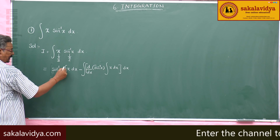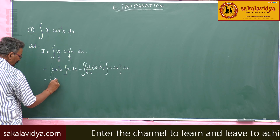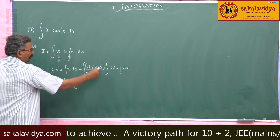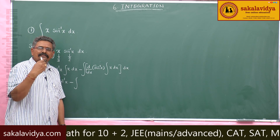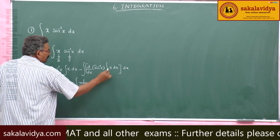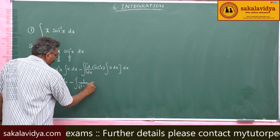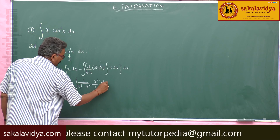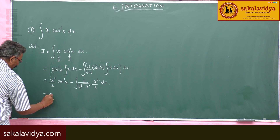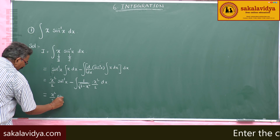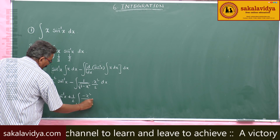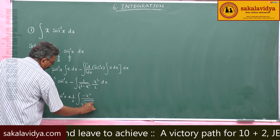Now, the integral of x dx is x²/2. So we can write x²/2 · sin⁻¹x minus the integral of the derivative of sin⁻¹x, which is 1/√(1−x²), times the integral of x dx, which is x²/2, times dx. Taking out 1/2 as a common factor, this becomes x²/2 · sin⁻¹x plus 1/2 times the integral of −x²/√(1−x²) dx.